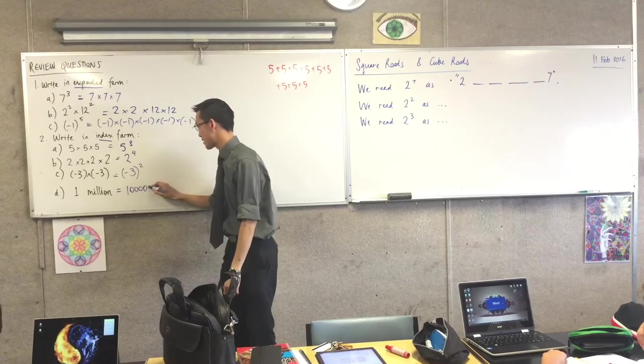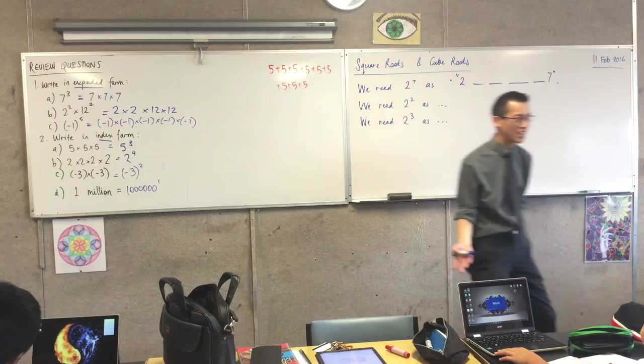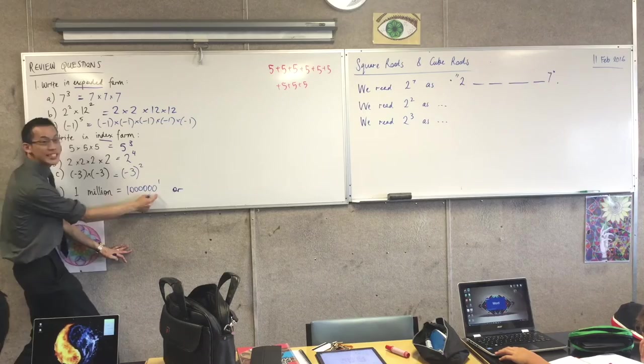And to the power of one. That is in index form, isn't it? Because it's got an index. Looks okay to me. That's a fine answer. Does someone want to suggest another one? Eric? Ten to the power of six. Okay. Now, you've gone straight right to the smallest one. Do you notice there's one, two, three, four, five, six zeros, right?